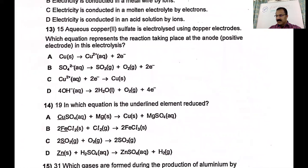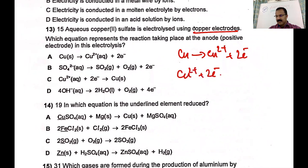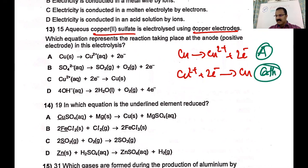Aqueous copper sulfate is electrolyzed using copper electrodes. The anode reaction is: Cu → Cu²⁺ + 2e⁻. The cathode reaction is the reverse: Cu²⁺ + 2e⁻ → Cu. If you are using copper sulfate with copper electrodes, the anode equation represents the reaction at the positive electrode. So the correct answer is A.